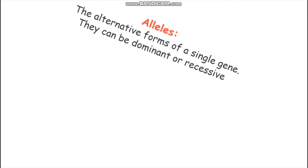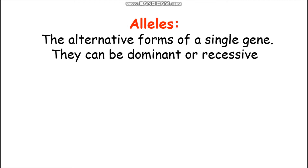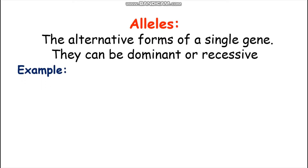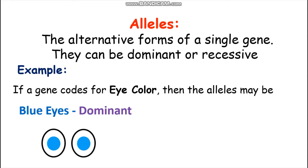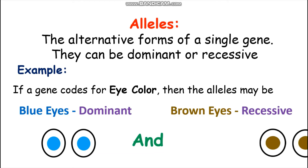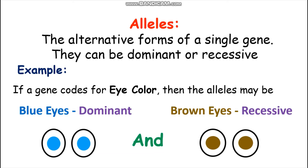The second term I will be using is allele. Alleles are the alternate forms of a single gene. They can be dominant or recessive. An example is: if a gene codes for eye color, then the alleles may be blue eyes, which may be dominant, and brown eyes, which may be recessive — and this can be vice versa.